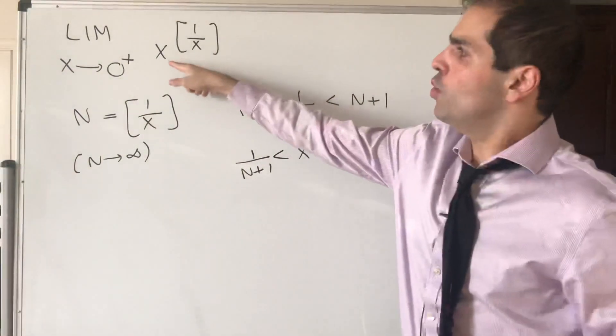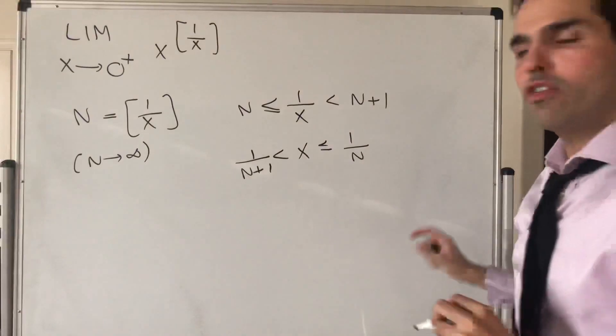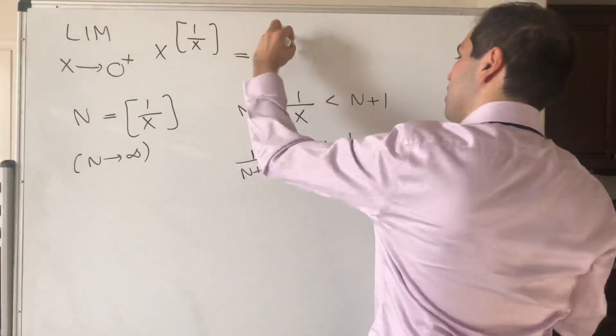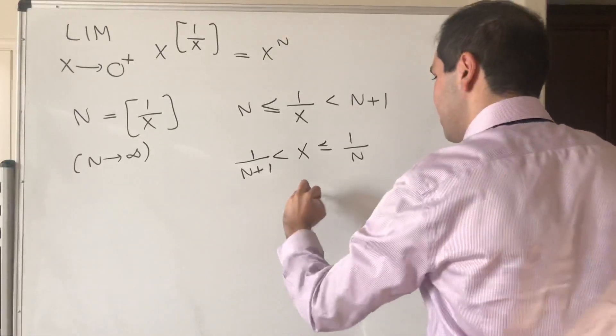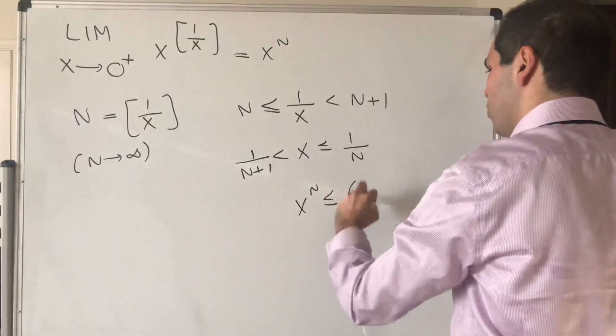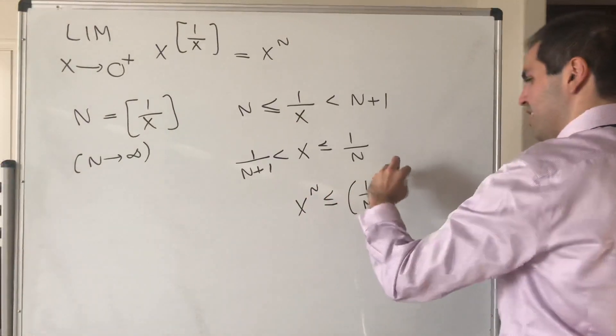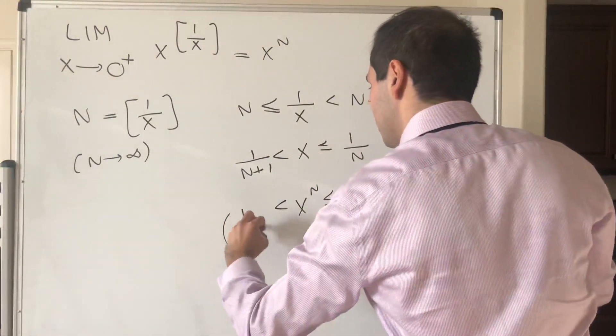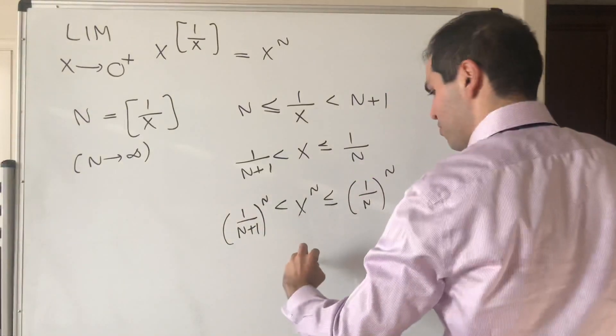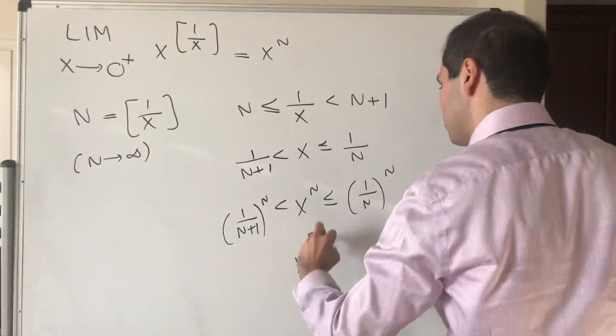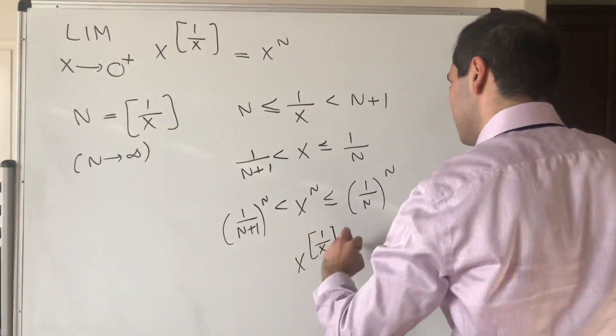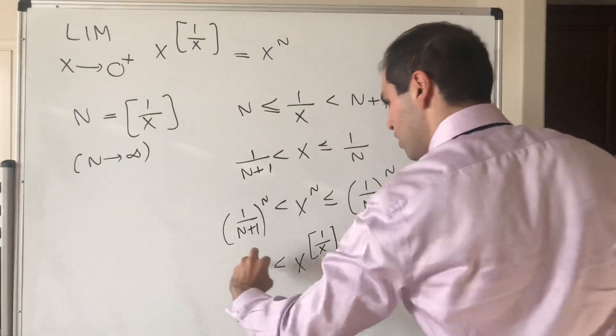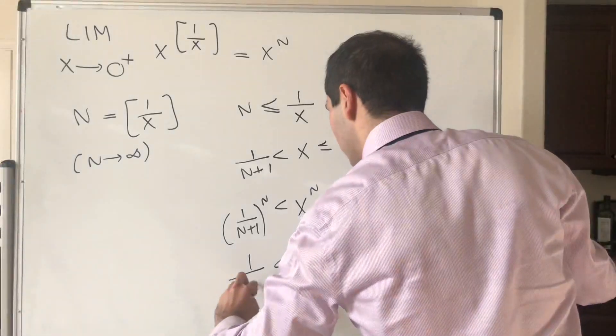But then what do we want? We want x to the floor of 1 over x, which is really x to the n. So x to the n is between 1 over n to the n and 1 over n plus 1 to the n. So in the end, we get x to the floor of 1 over x is between 1 over n to the n and 1 over n plus 1 to the n.